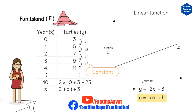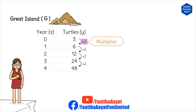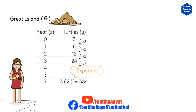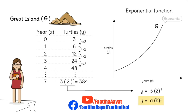Now let's look at Island G. Here we can multiply by two — we have an annual multiplier, multiplying by two every time. So if we want to figure out the number of turtles in year seven, we take the turtles we began with — three — times two to the power of seven. That is our exponent. This is perfectly an exponential function: y equals a times b to the power of x. And this is what the graph of this exponential function looks like. Remember, when it's exponential, it's always going to beat the linear equation, because whenever there's a multiplier above one, it always beats the linear equation.